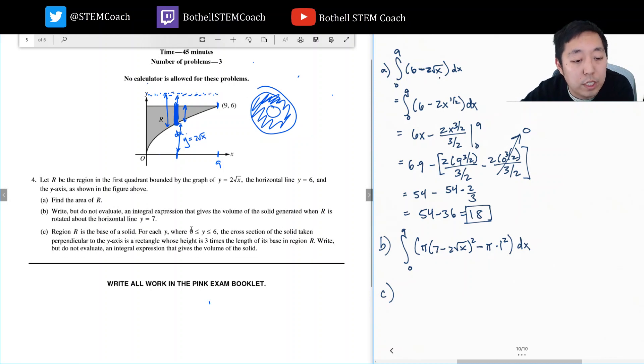Region R is the base of a solid. For each y between y equals 0 to 6, the cross section is taken perpendicular to the y-axis. Each cross section is a rectangle whose height is 3 times the length of its base in region R. So here, we're doing little cross cuts like this, and each of these is a rectangle.